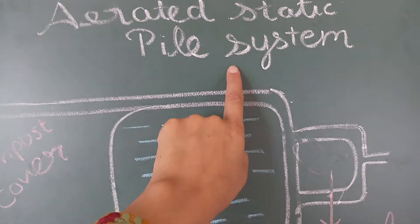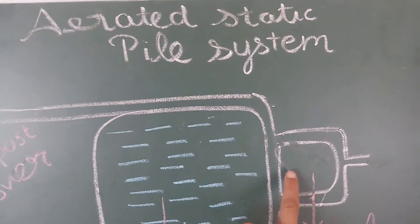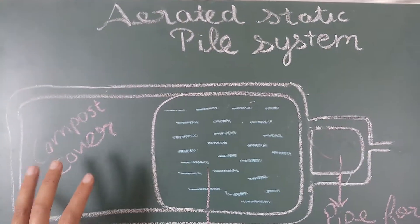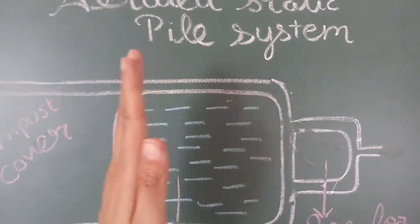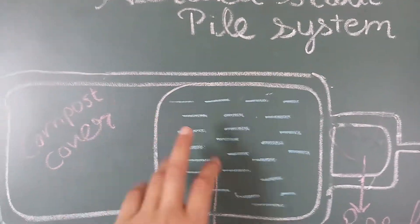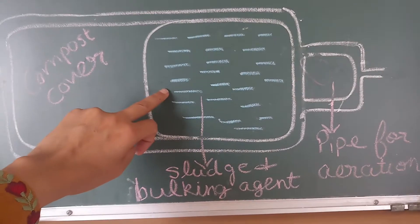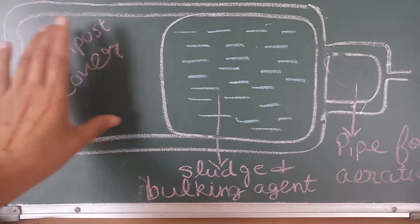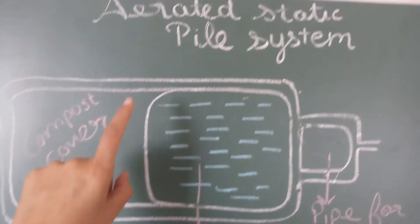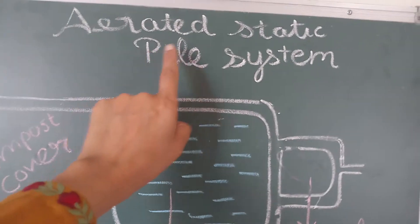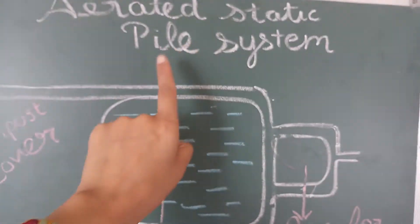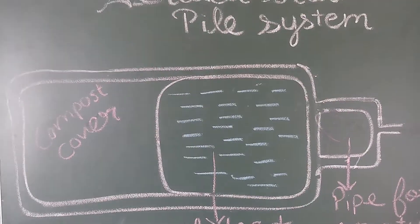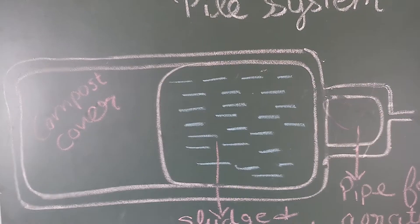To recap: 'Aerated' means aeration is being used, 'static' means the pile stays in place with no movement, and 'pile' means layers — first the sludge and bulking agent, then a compost cover added on top. That was the aerated static pile system.